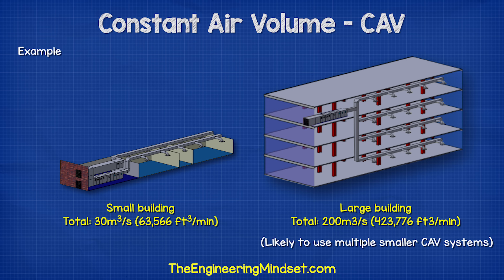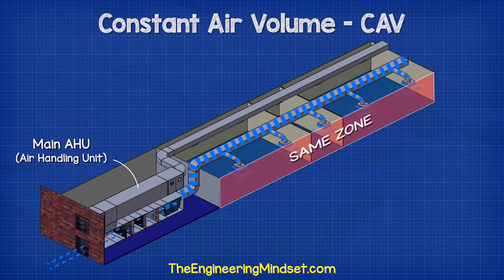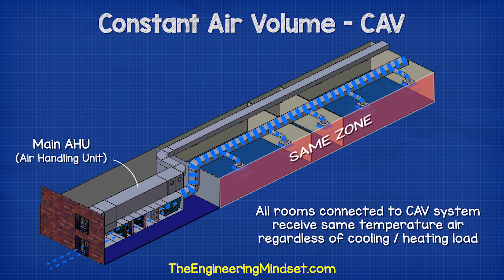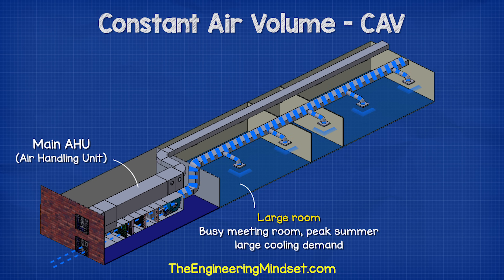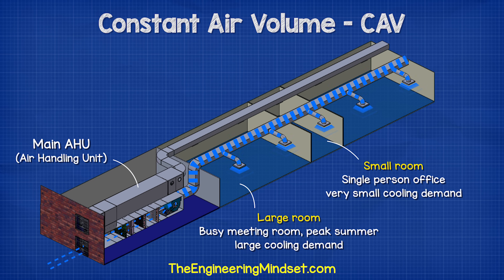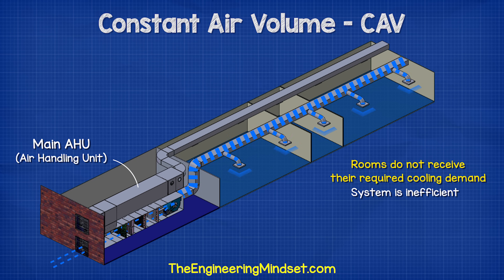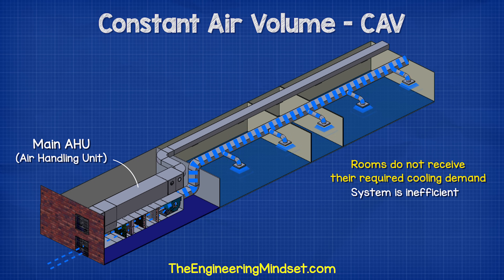One of the main problems with the CAV system is that everything connected to the AHU and the supply duct is classed as one zone. That means all the rooms connected to it will receive the same temperature air regardless of their cooling load. For example, this could be a busy meeting room in the middle of summer with a very large cooling demand from solar thermal heat gain, but this room will receive the same temperature air as a tiny office for one person. That's going to be very uncomfortable. This means the rooms are not receiving their required cooling demand, so the system is very inefficient because we're generating a lot of cooling which is simply being wasted.